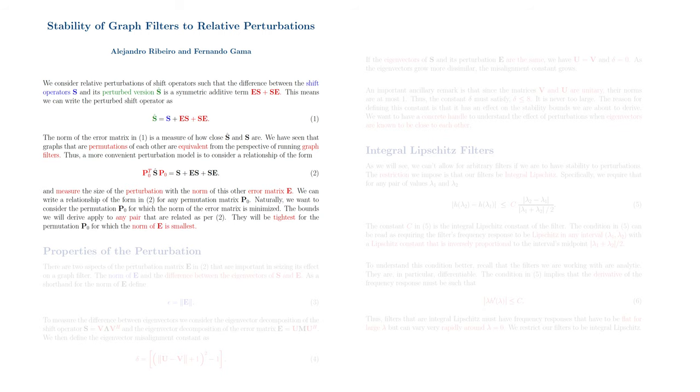Naturally, we want to consider the permutation for which the norm of the error is minimized. The bounds we will derive here apply to any pair of shift operators that are related as per equation 2. They will be tightest, however, for the permutation matrix P sub 0 for which the norm of the error E is smallest.